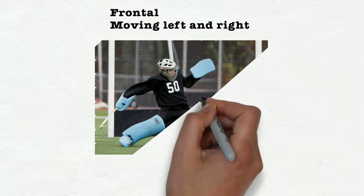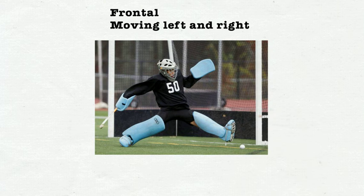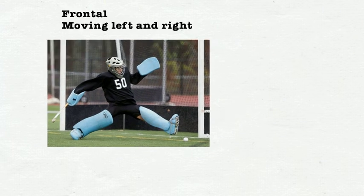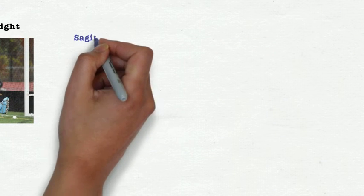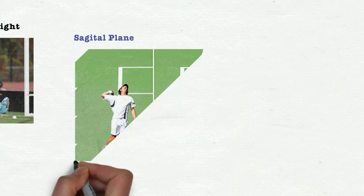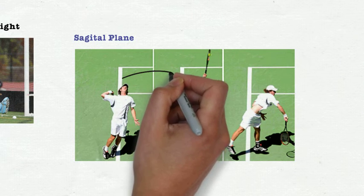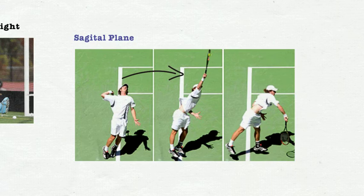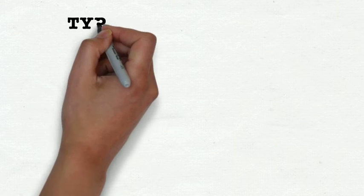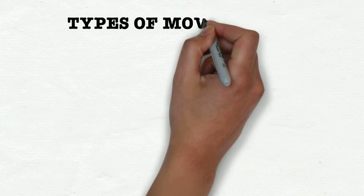So for the frontal, as we mentioned, is moving left and right. So clear example here, hockey goalkeeper reaching out with their left leg to try and stop the ball. And then the sagittal plane, which is double T. And here you're moving from the back to the front. You might recognize this guy here. And you can see that it's clearly moving from the back to the front.